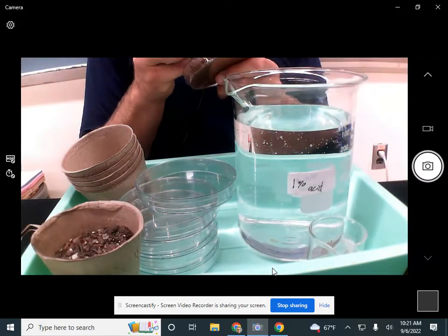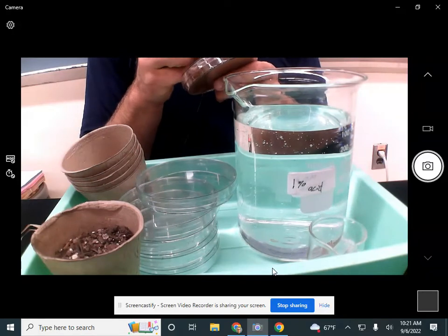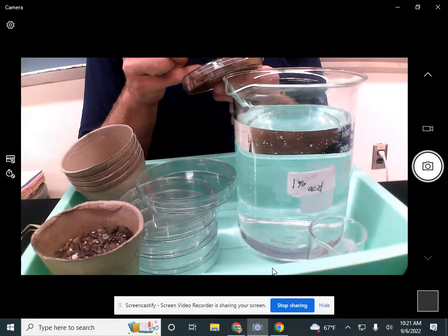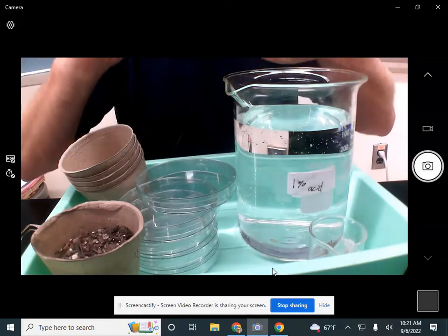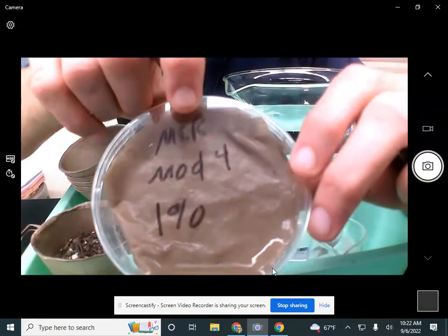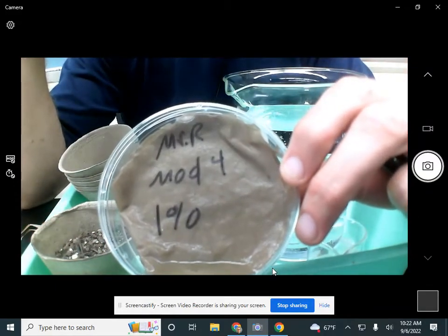So if I do Mr. R, mod four, and then I put everybody else's initials and I'm in the 1% acid group. If I did something like that, that's not going to get mixed up with any other class.